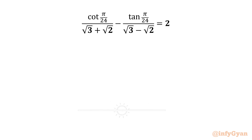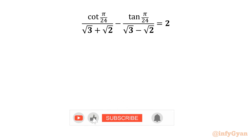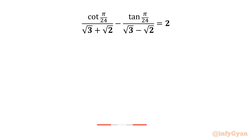Hello friends, welcome back to Infigyan. Today in this video we are going to solve one very interesting question from trigonometry. We have to show that cot(π/24) over (√3 + √2) minus tan(π/24) over (√3 - √2) is equal to 2.